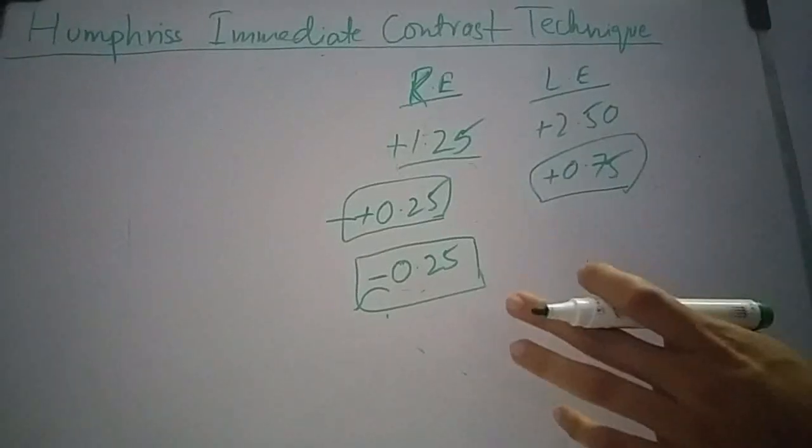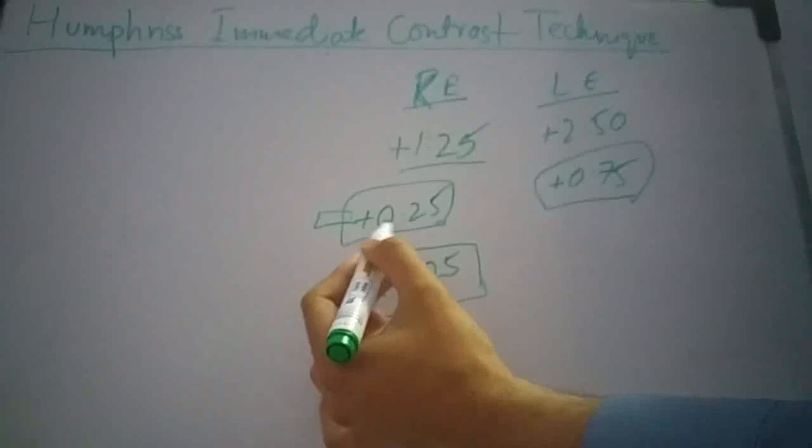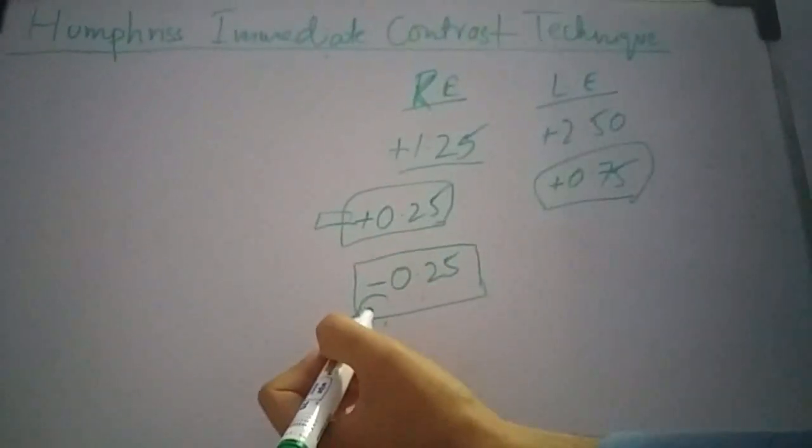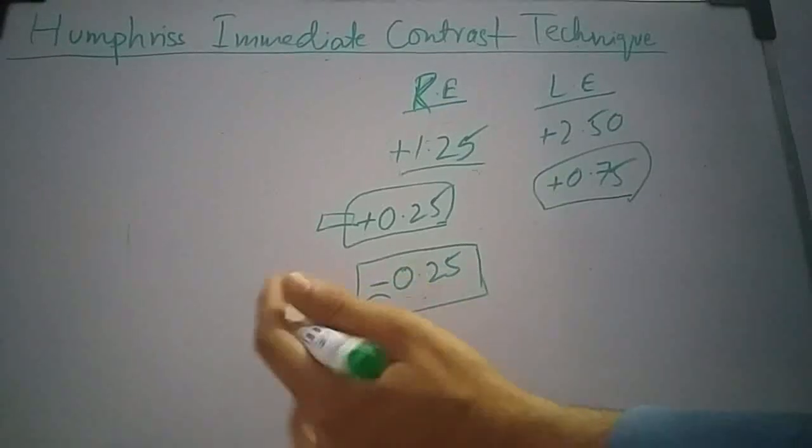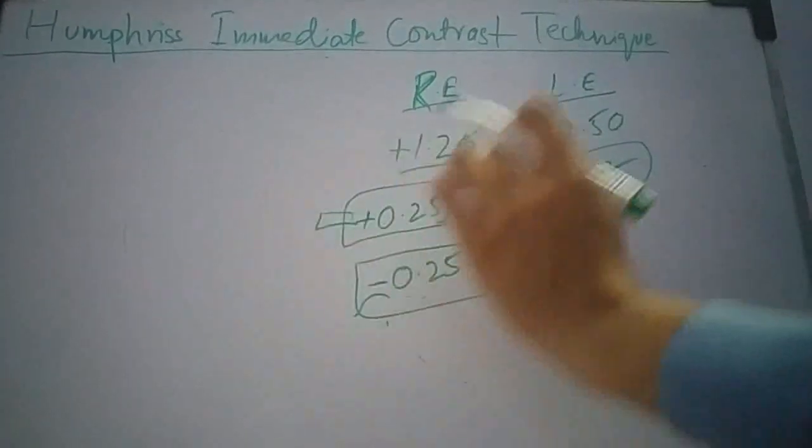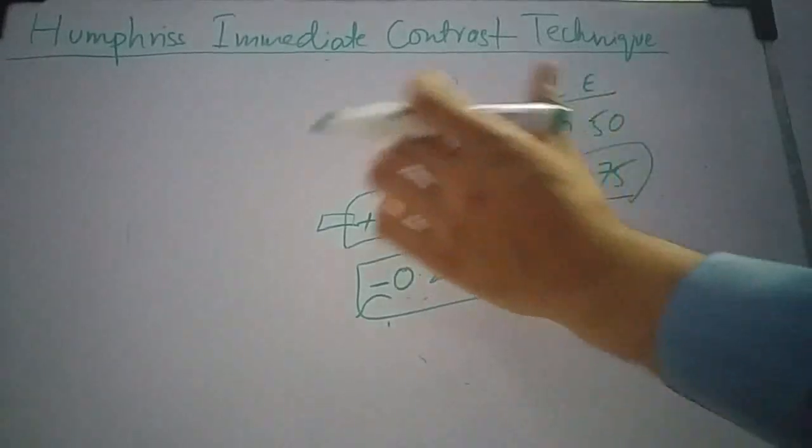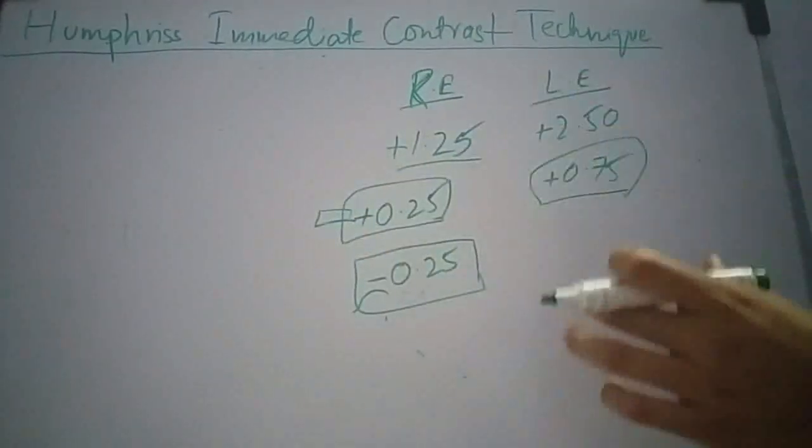I will continue until the patient says that vision is blurred with plus 0.25 and there is no effect with minus 0.25. Once this is achieved, the eyes are balanced. Now I will fog the right eye and repeat these steps on the left eye.